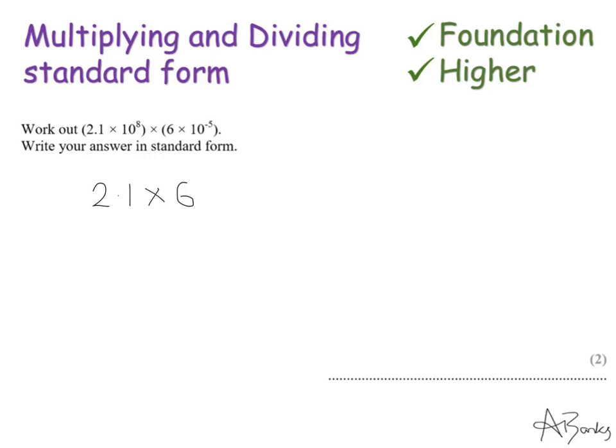Now standard form always has a times 10 to some power. And my power here because I'm multiplying my two numbers together I add my indices. So it's just like our laws of indices. I'm going to add these together. So my power is going to be whatever 8 add minus 5 is.